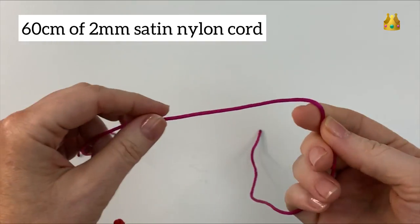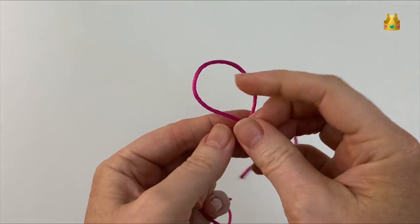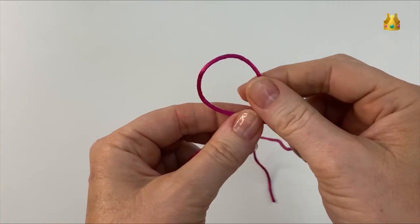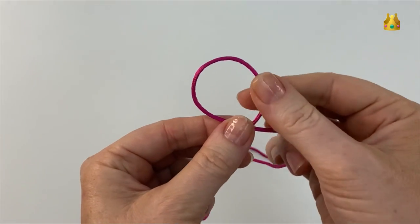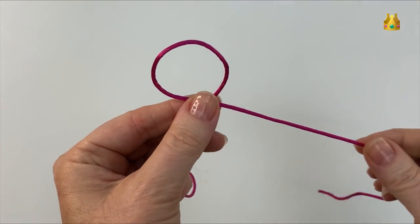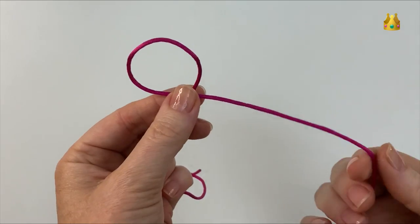To start with in about the middle of the cord we're going to bring this right side around on top to make a loop. Now we bring it around to form another loop.